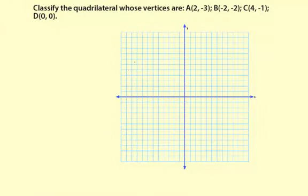Classify the quadrilateral whose vertices are A(2, -3), B(-2, -2), C(4, -1), and D(0, 0).